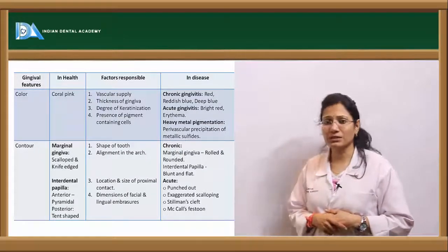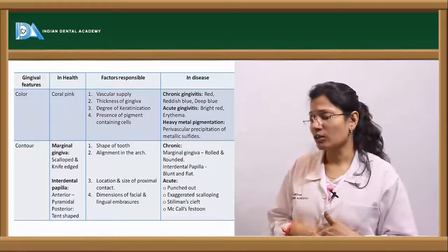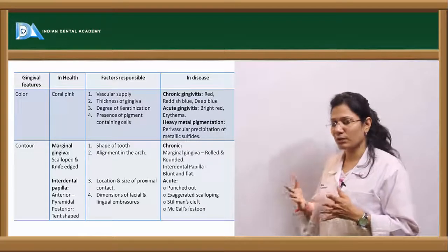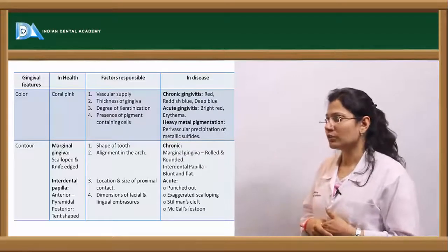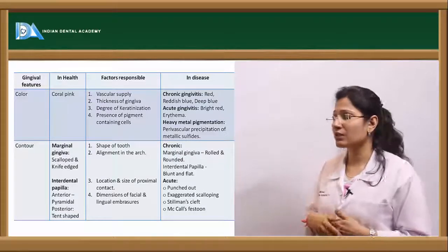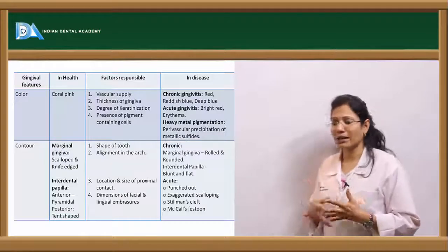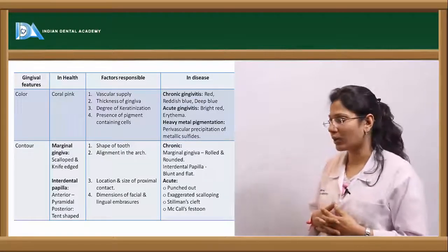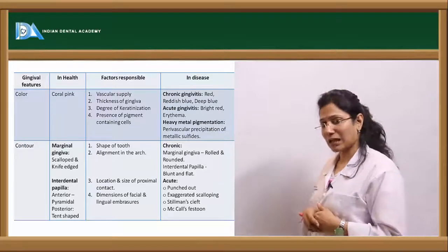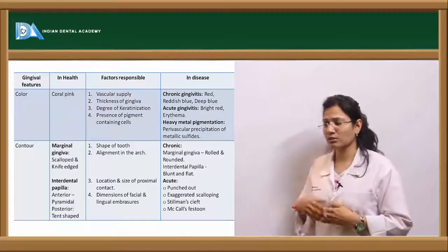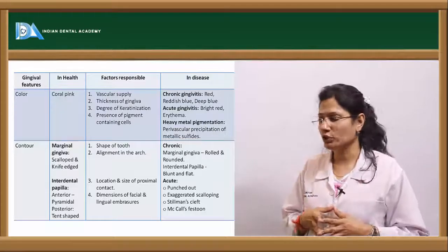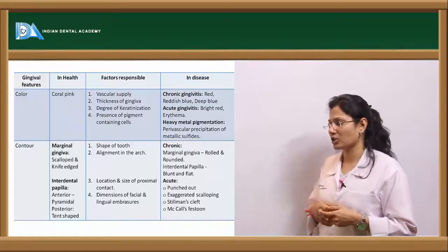The reasons responsible for the normal scalloping and knife-edged and pyramidal shape of the gingiva: for the pyramidal anterior shape, it is mainly related to the proximal contact — the location and size of the proximal contact and the dimensions of the facial and lingual embrasures. For the scalloped and knife-edged shape, the reasons would be the shape of the tooth and the alignment in the arch.